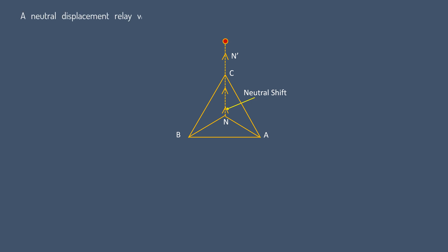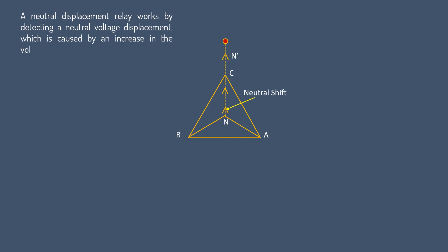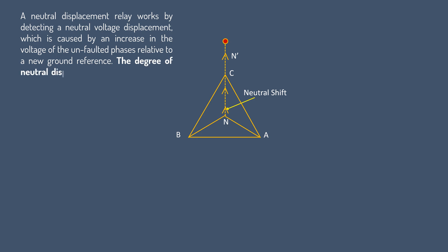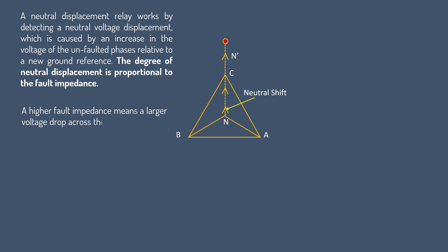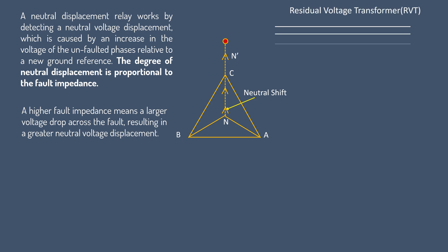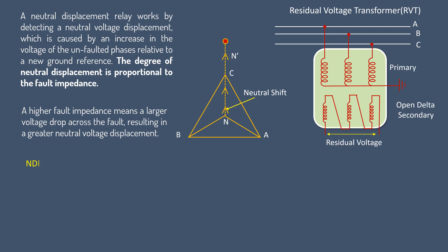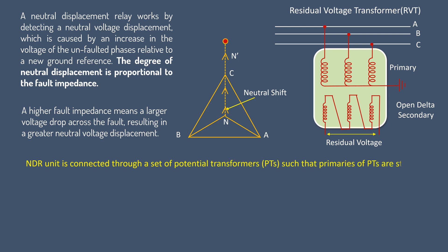A neutral displacement relay works by detecting a neutral voltage displacement caused by an increase in the voltage of the unfaulted phases relative to a new ground reference. The degree of neutral displacement is proportional to the fault impedance — a higher fault impedance means a larger voltage drop across the fault, resulting in a greater neutral voltage displacement. The NDR unit is connected through a set of potential transformers (PTs) such that primaries of PTs are star connected, whereas secondaries are connected to NDR in an open delta configuration.